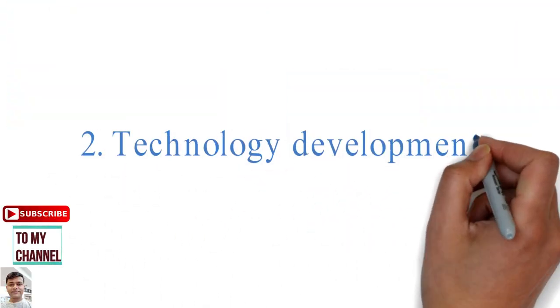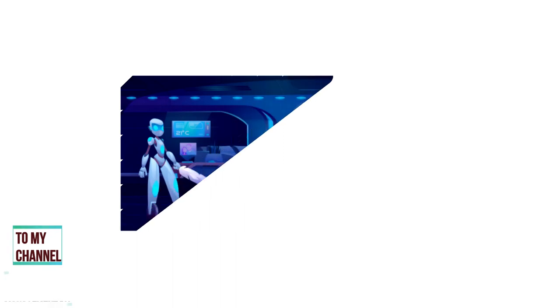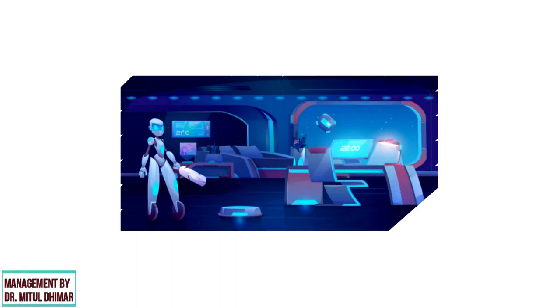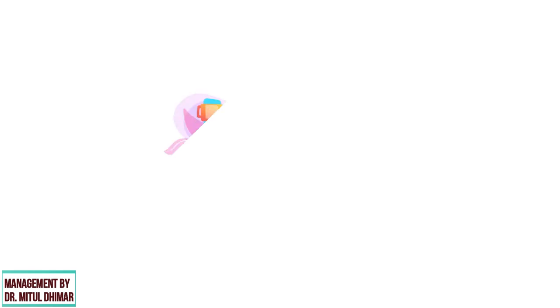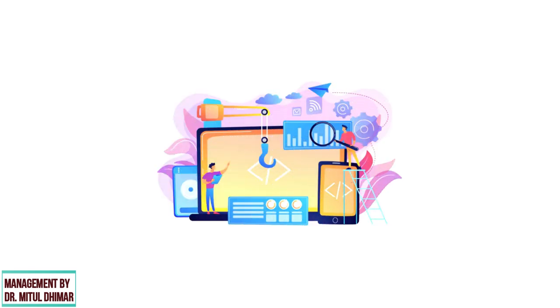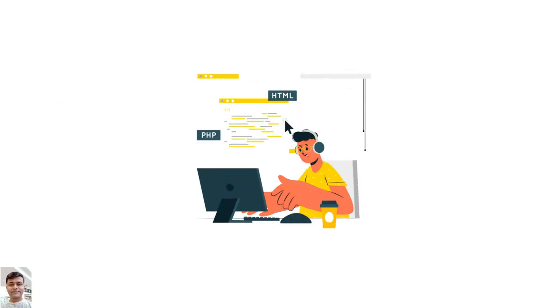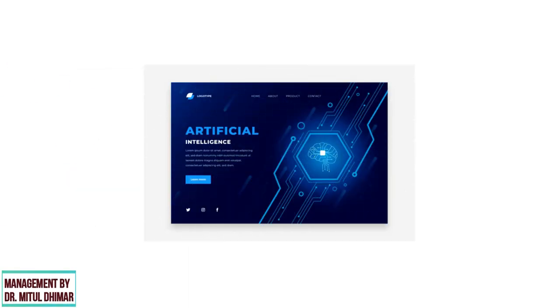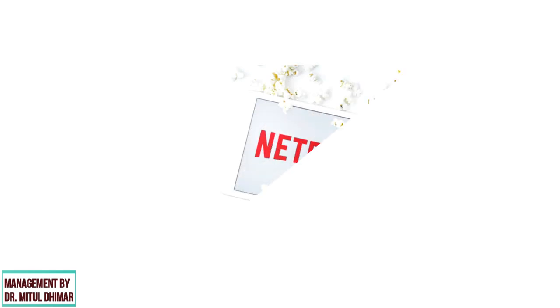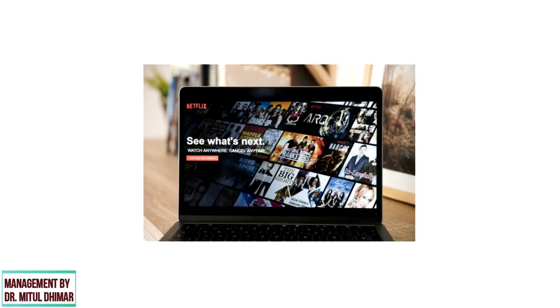Number two: technology development. It pertains to the equipment, hardware, software, procedure and technical knowledge brought to bear in the firm's transformation of inputs into outputs. The level of technology development determines an organization's efficiency. Technology development activities can be grouped into efforts to improve the product and the process. For example, artificial intelligence: Netflix uses the watching history of users with similar tastes to recommend what a user may be most interested in watching next.